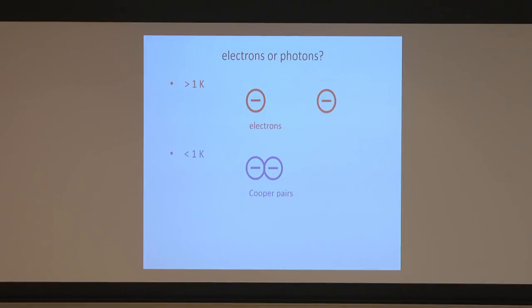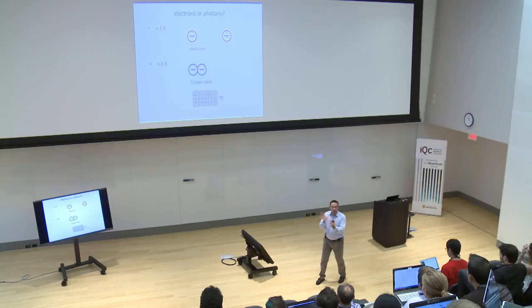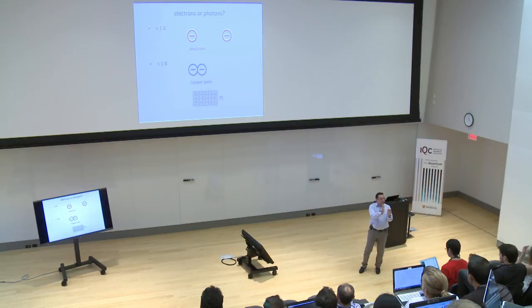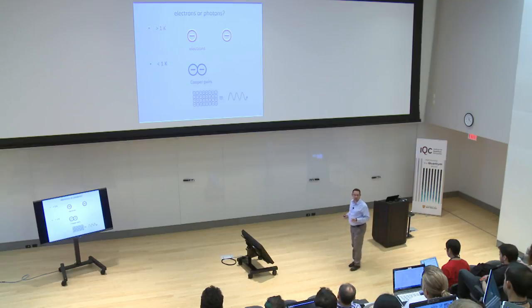Our circuits contain an Avogadro number of these Cooper pairs. When we control these devices, the center of mass of the Cooper pair condensate moves left and right very quickly. So the actual degree of freedom we are harnessing in our devices is photons — even though they originate from electrons, once cooled the system becomes a condensate of Cooper pairs, and the motion of this condensate corresponds to photons. This is very similar to what is done in quantum optics: we use photons.